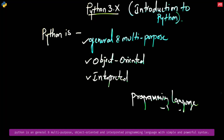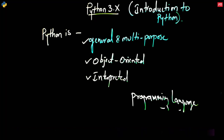So let's talk about these keywords. There are three different keywords in this definition, so let's try to understand what each keyword means. Let's start with general and multipurpose. When it comes to programming languages, not every language can be used for all purposes — there are a few languages which are very specific to a particular domain. We call them domain-specific languages.